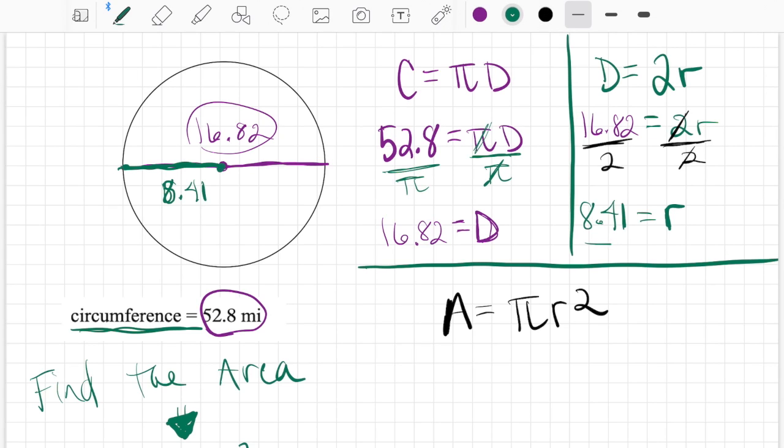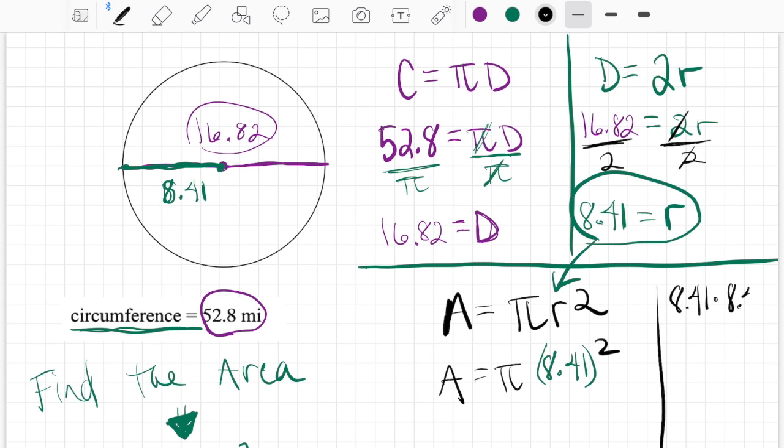So I'm going to take my radius, and I'm going to plug it in for r. So 8.41 times pi squared. So now I'm going to square it.